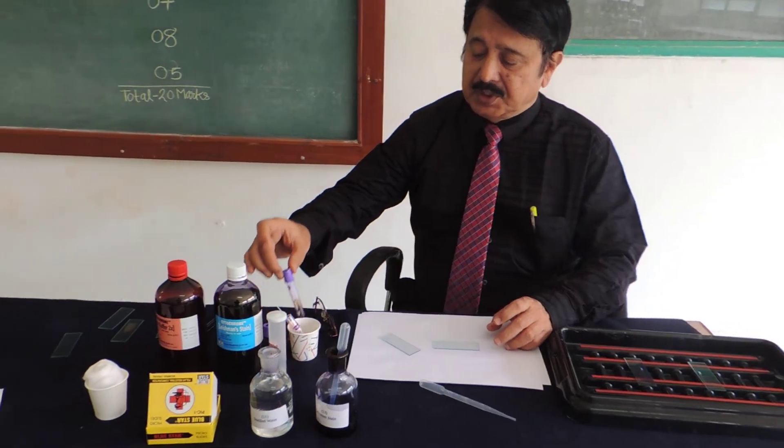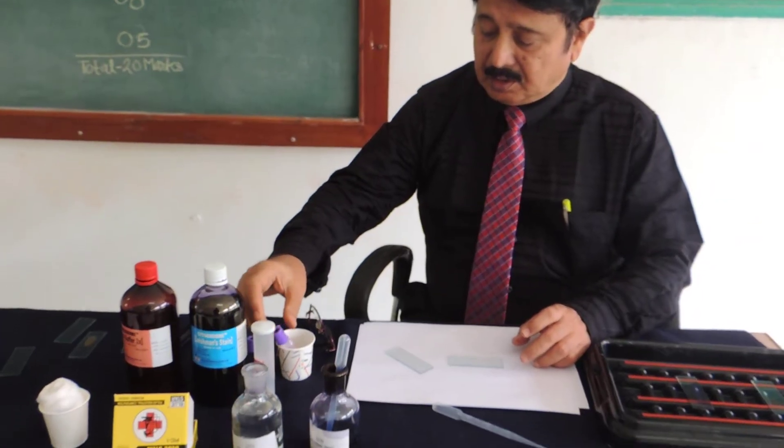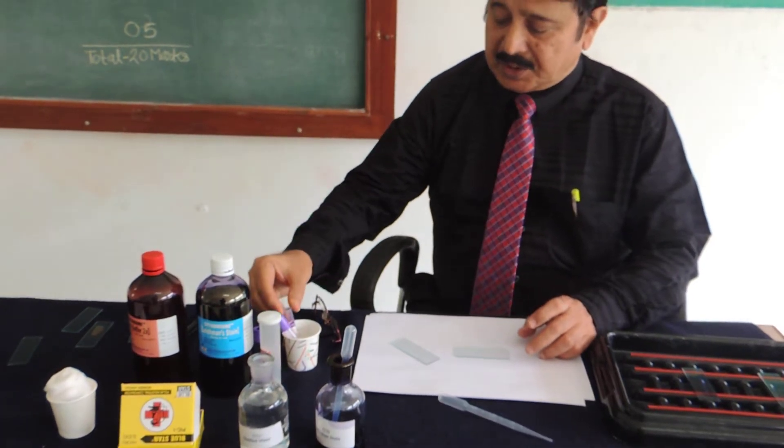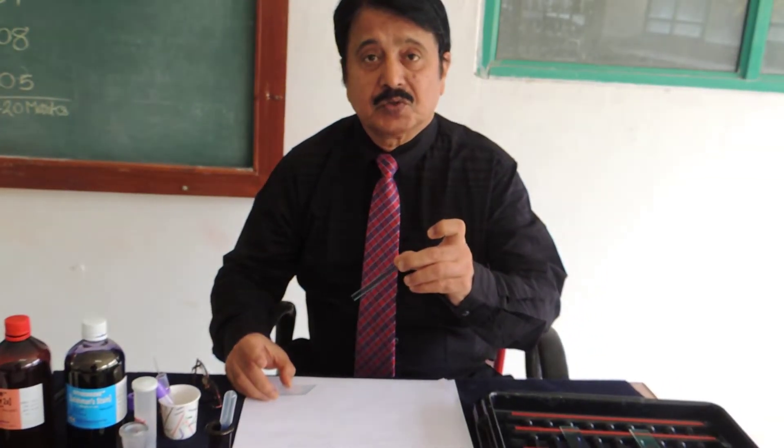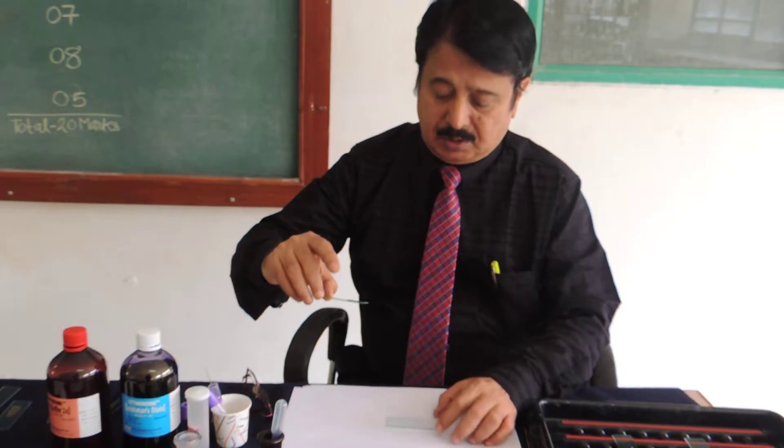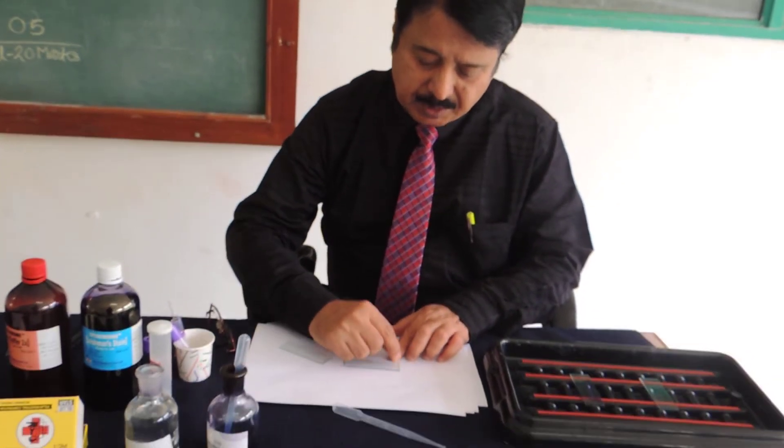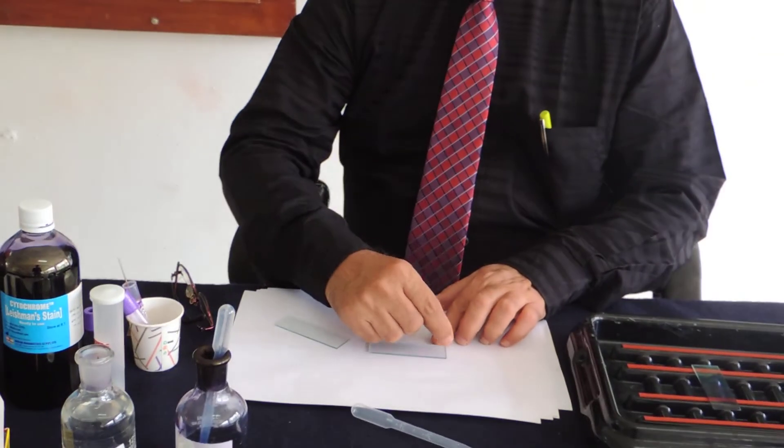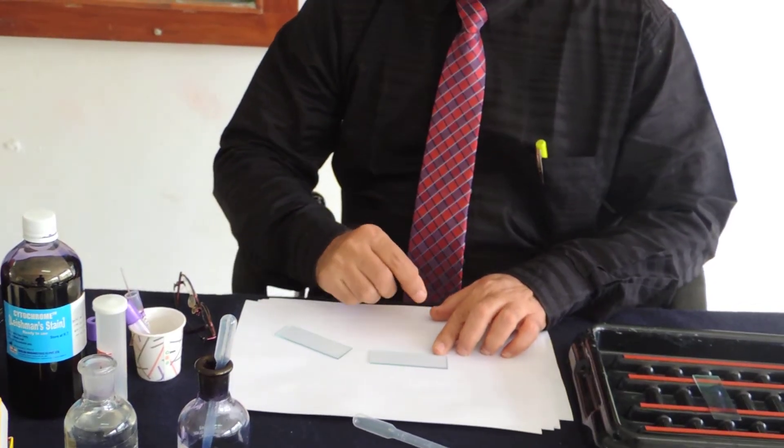And you are given the blood sample in the EDTA tube in the examination. Now as far as the slides are concerned, one is the slide on which we are going to make the smear and the other slide is known as spreader. You can put your number here for the identification. So last two digits of your exam number or your initials you can put for the identification.